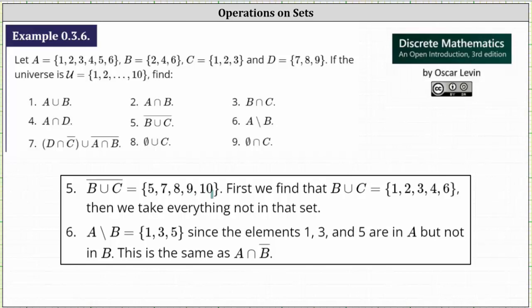The integers 1 through 10 that are not in the set {1, 2, 3, 4, 6} form the complement. So the complement of B union C is the set containing 5, 7, 8, 9, 10 — these are the elements not in B union C.